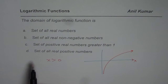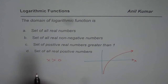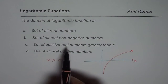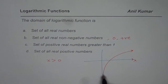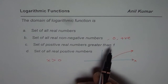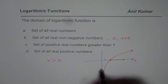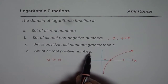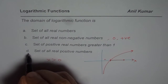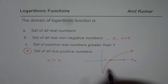Amongst the choices, set of all real numbers is incorrect. Set of all real non-negative numbers — non-negative numbers means zero and positive numbers, and as you can clearly see, zero is not in our domain, so this is not correct. Set of positive real numbers greater than one — well, one is here, so we have missed out on numbers between zero and one. So that is also not correct. Set of all real positive numbers is the correct answer.